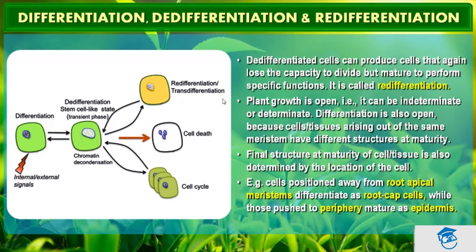The de-differentiated cell enters the cell cycle, and some of those cells go to the cell-death state. Plant growth is open — it can be indeterminate or determinate. Differentiation is also open because cells or tissues arising from the same meristem have different structures at maturity. The final structure at maturity of a cell is also determined by the location of the cell.